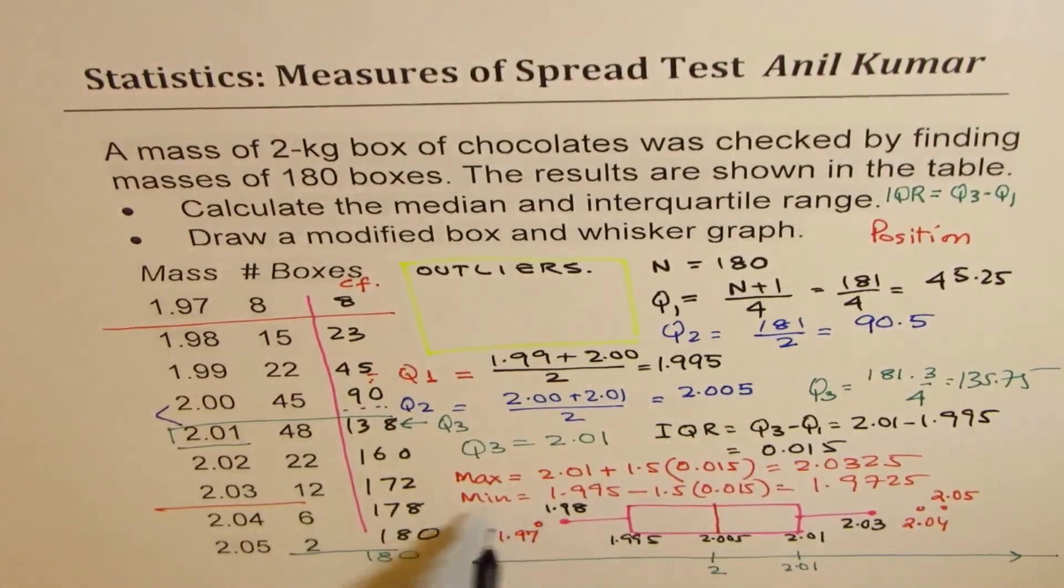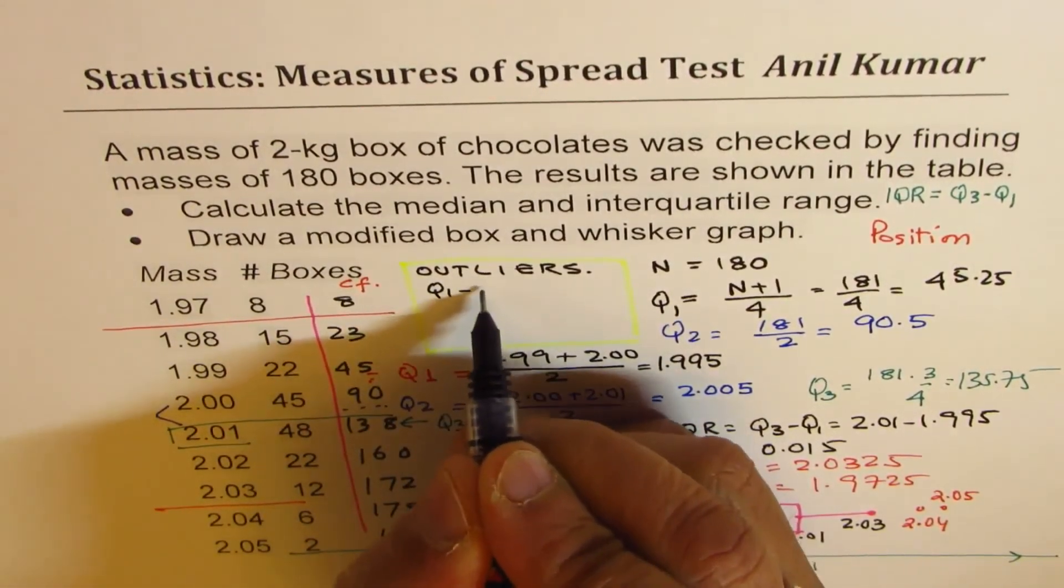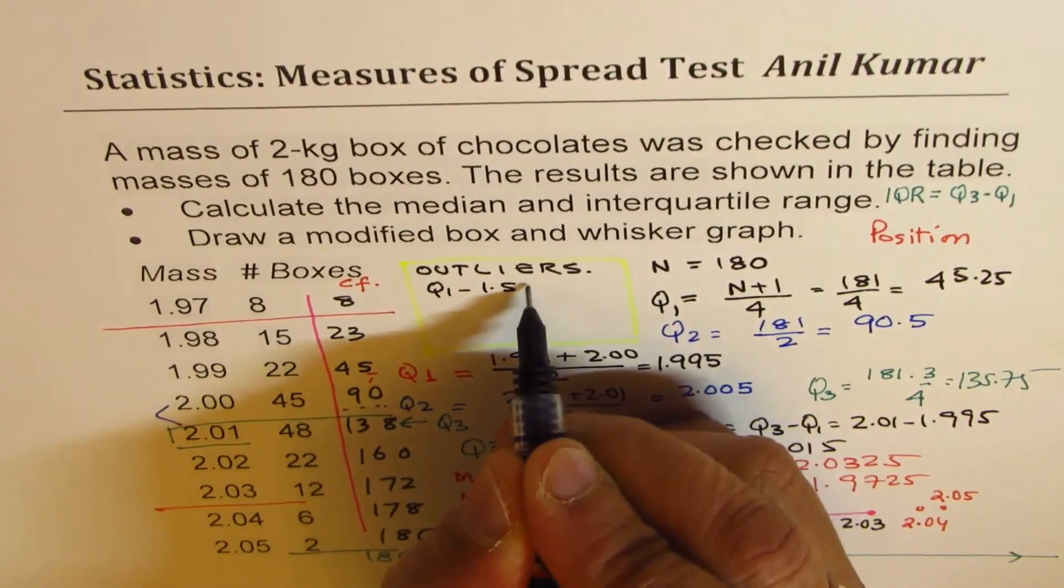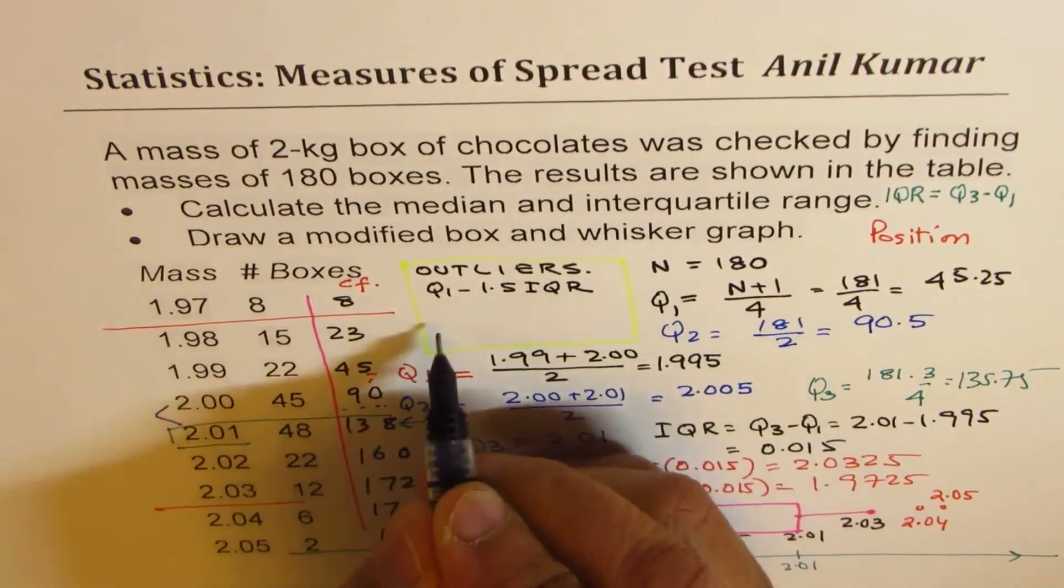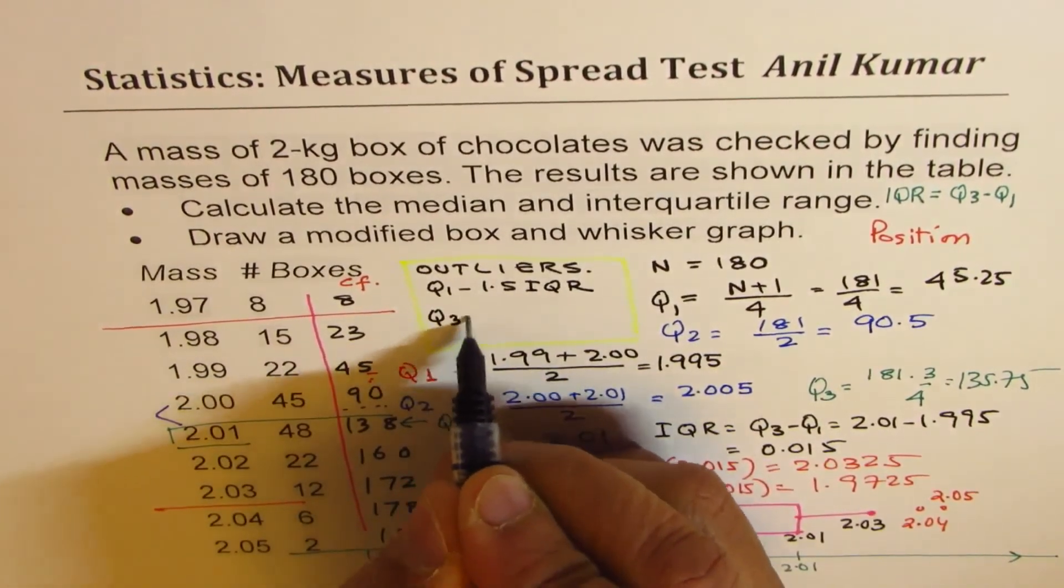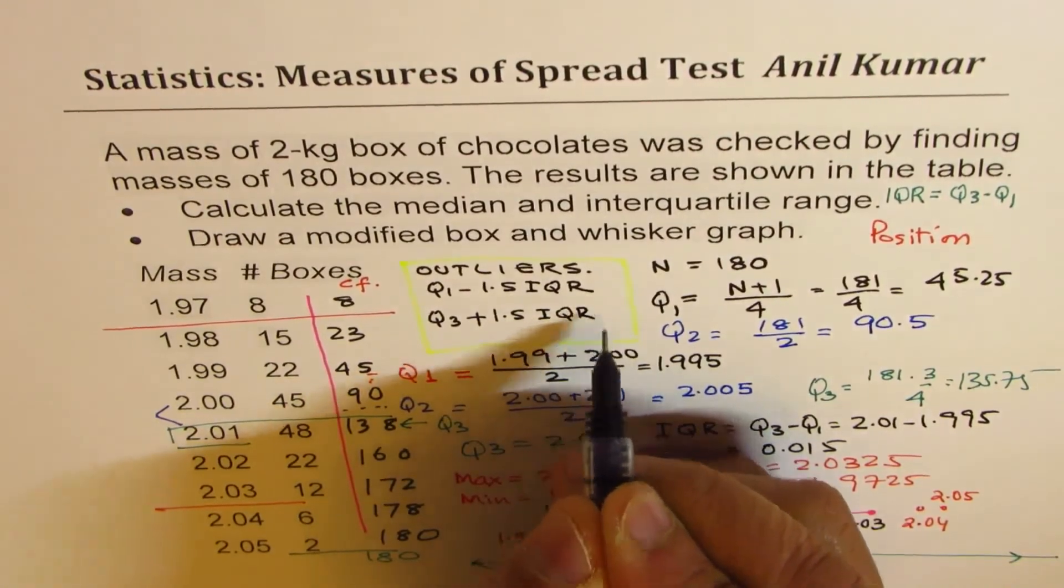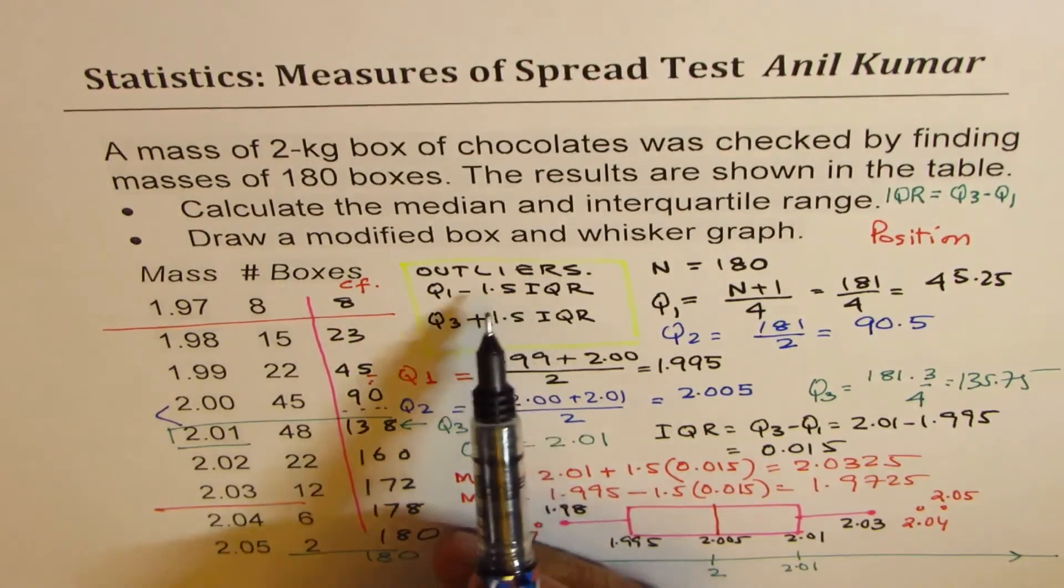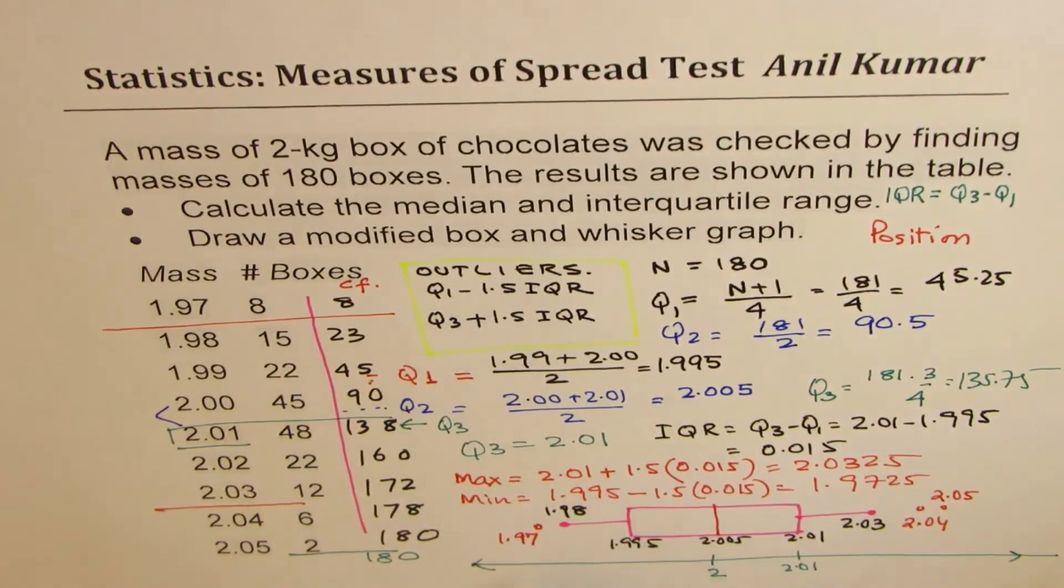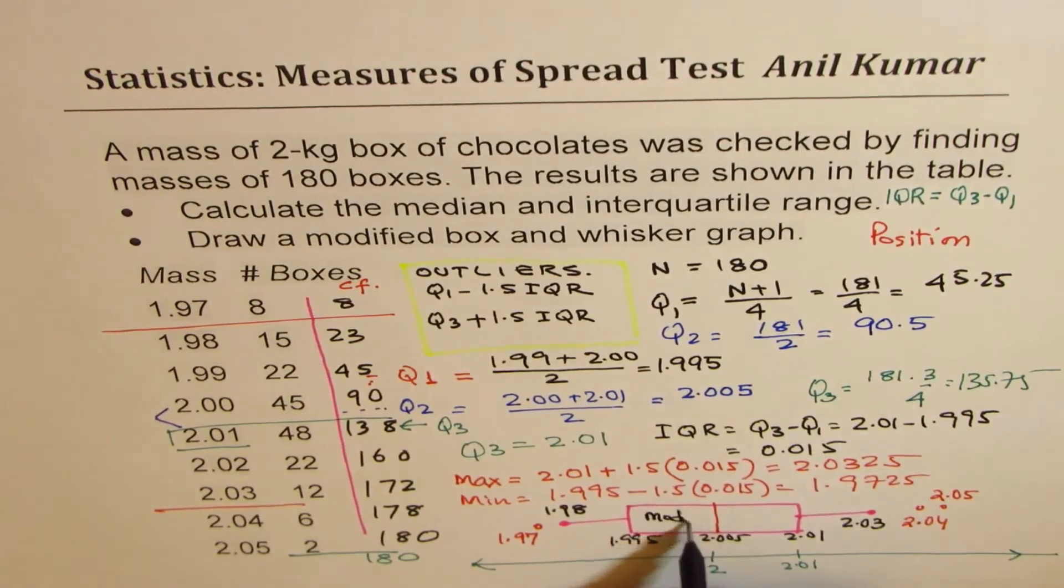What calculated, the kind of Q1 minus 1.5 times interquartile range, that gives you the lower value. And Q3 plus 1.5 times interquartile range gives you the upper limit. So anything in between will come in the modified box. So this is the modified box which we have since we are specifying the outliers.